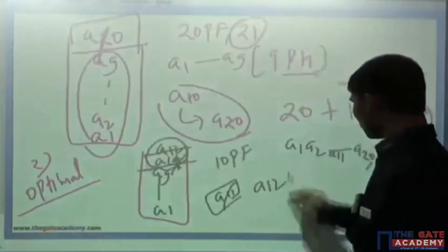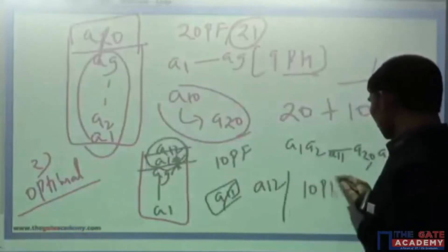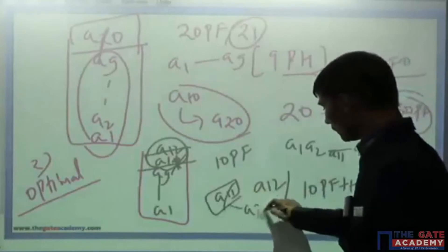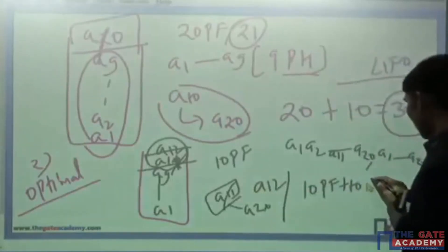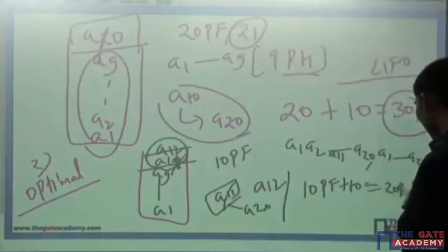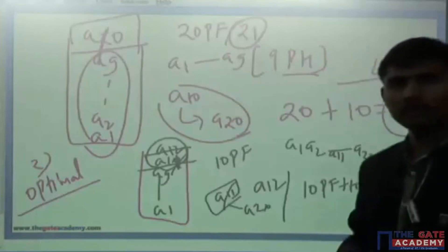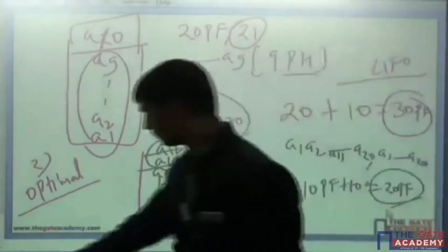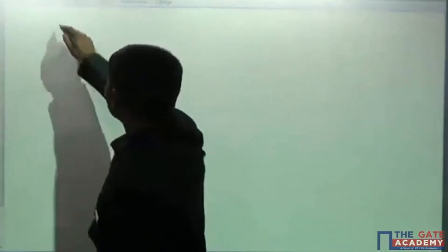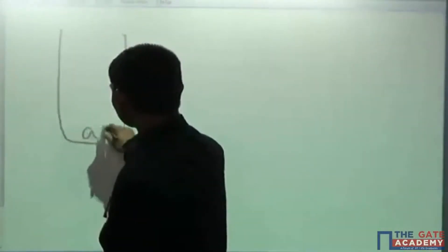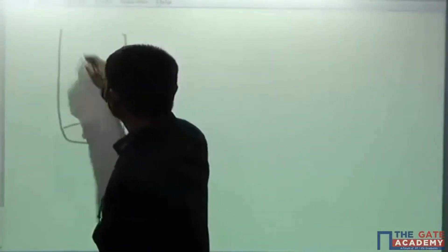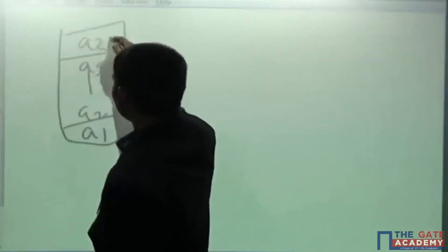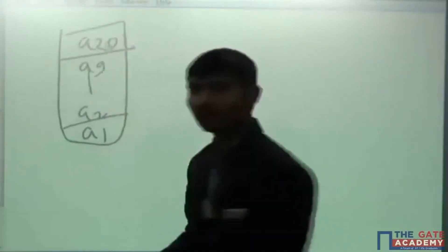In this way, total page faults will be 10 initial plus 10 from A11 to A20, so totally 20 page faults. The final status of the list is: A1, A2, up to A9, and then A20.